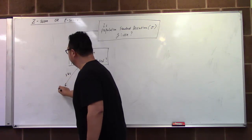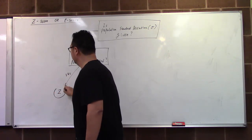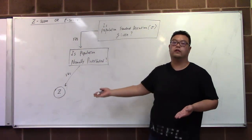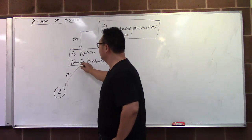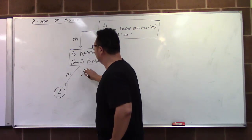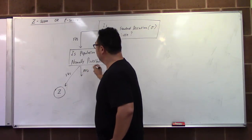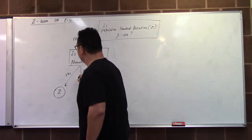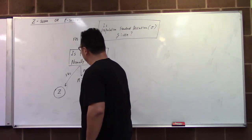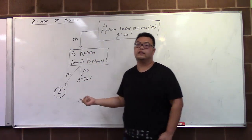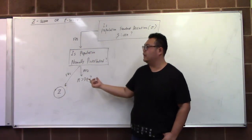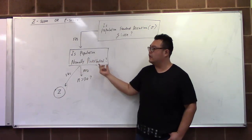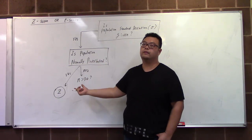Then if that is the case, the sample mean will follow the z-score — will follow the normal distribution. If we do not know that it is normally distributed, we will check the sample size. As the central limit theorem states, if the population is normally distributed, we can make the sample mean follow the normal distribution.